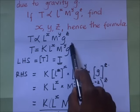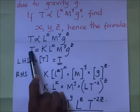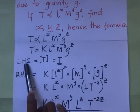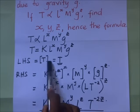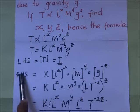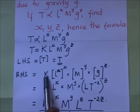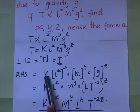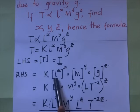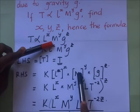We look at the left-hand side: we have periodic time T, so the dimensions on the left-hand side are simply [T]. On the right-hand side, K is a constant and constants are dimensionless, so it has no dimensions. Then we have L to the power x, where L represents length, times M to the power y, where M represents mass.